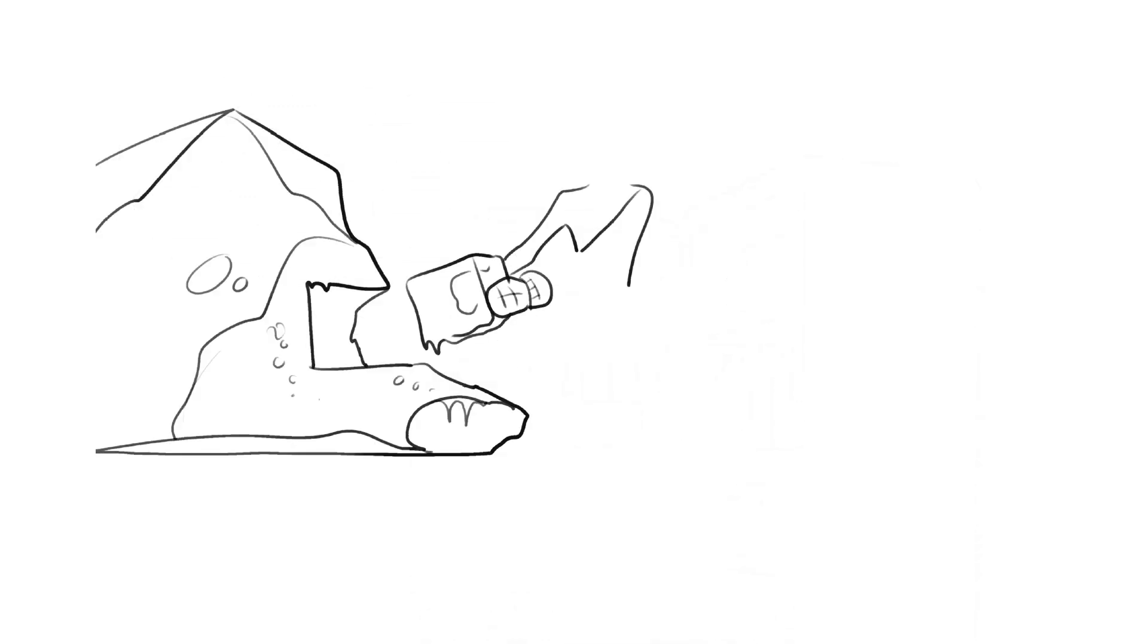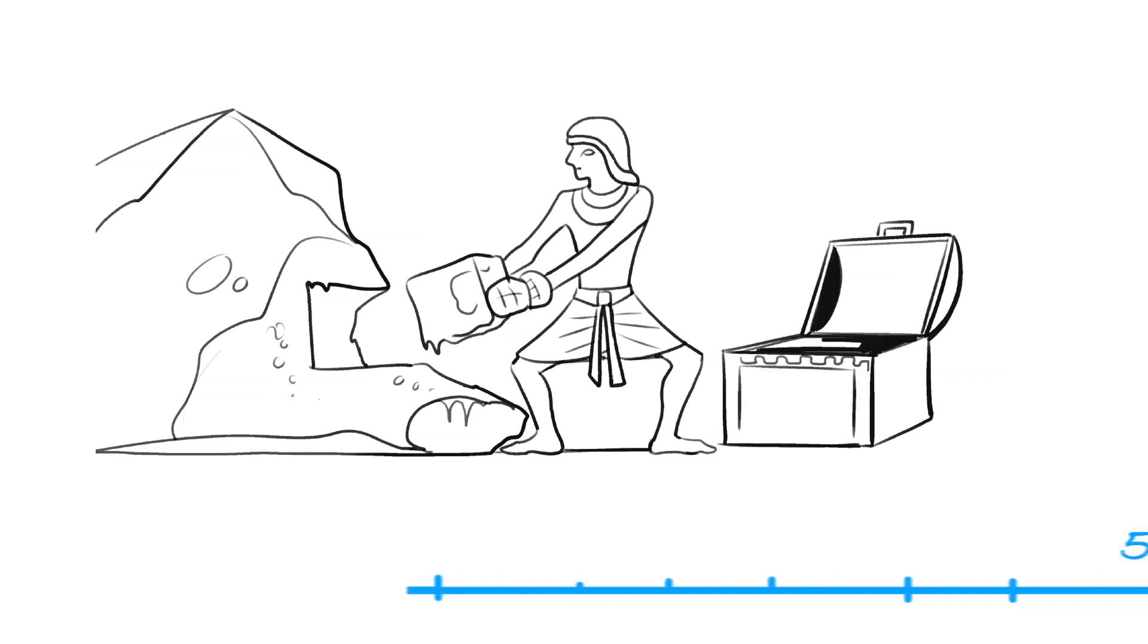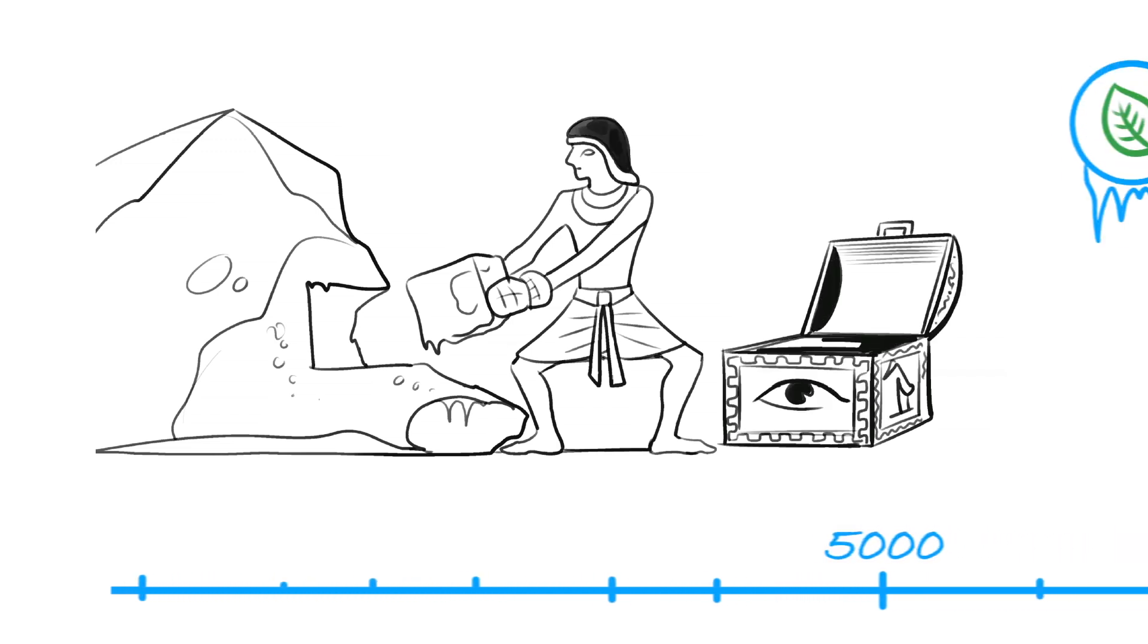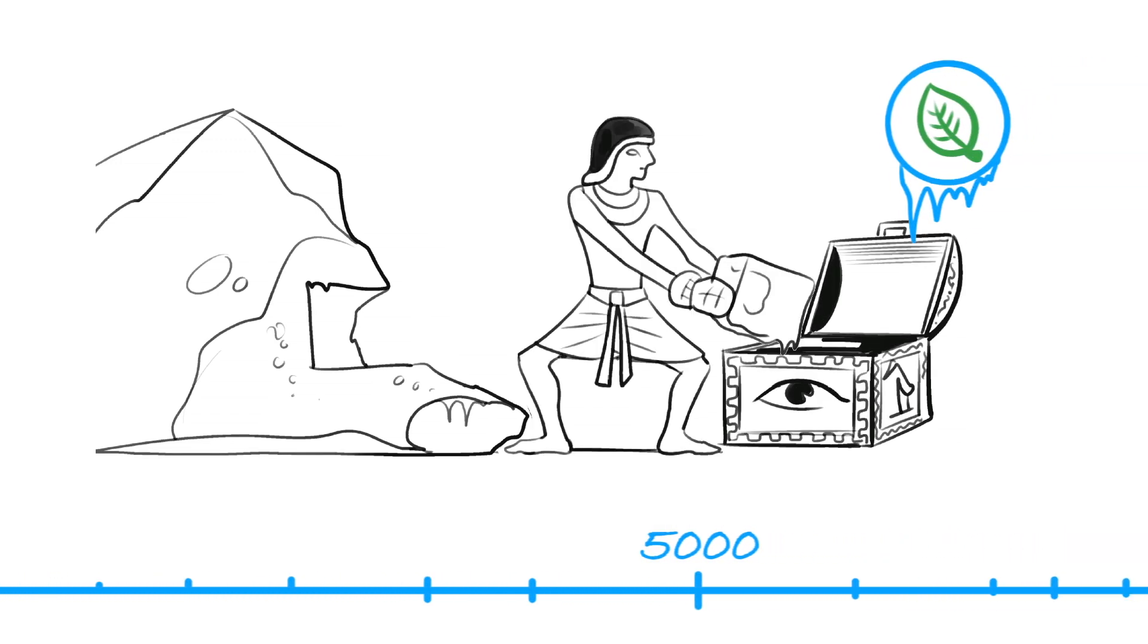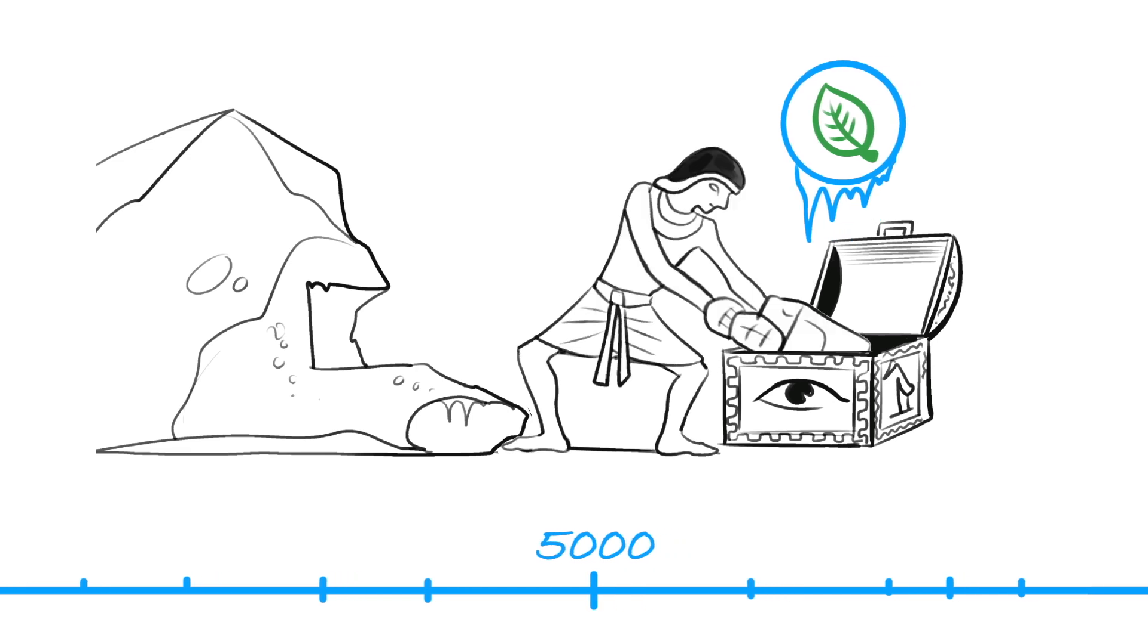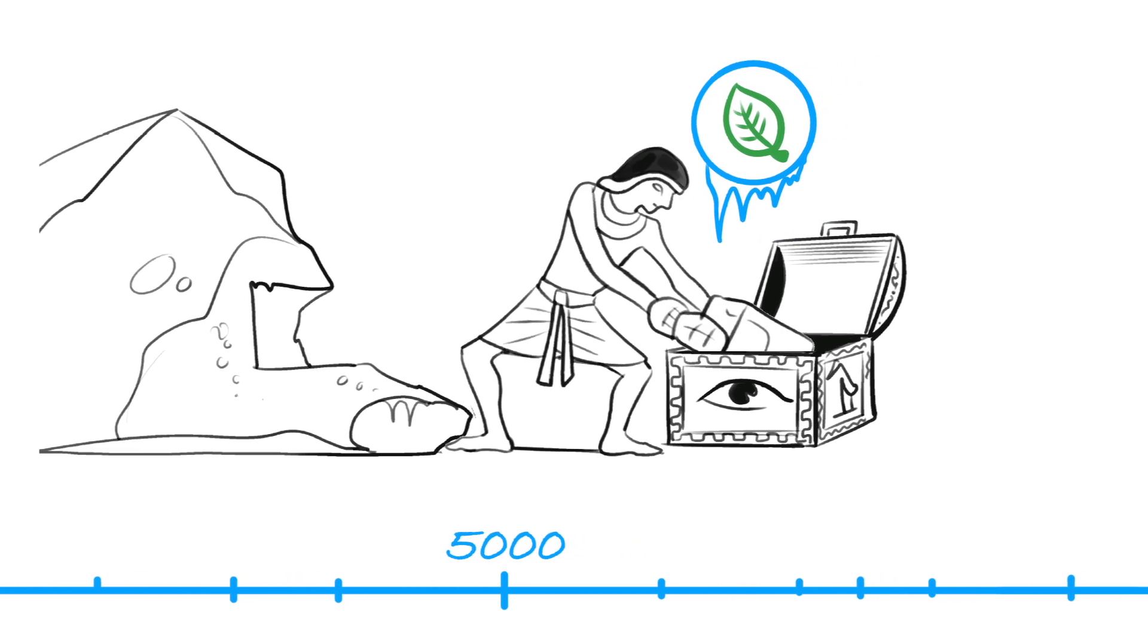People have been using refrigeration to help preserve food for centuries. More than 5,000 years ago, the Egyptians used the oldest natural refrigerant in the world for cooling their food and beverages: ice.